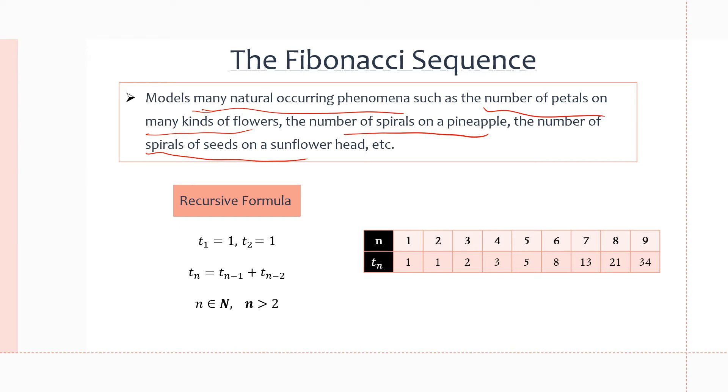And the recursive formula for the Fibonacci sequence is t sub n equals t sub n minus 1 plus t sub n minus 2. So the term that we're trying to find is equal to the previous term plus the previous previous term. And t1 of the Fibonacci sequence is always 1 and t2 is 1 as well. And n has to be greater than 2.